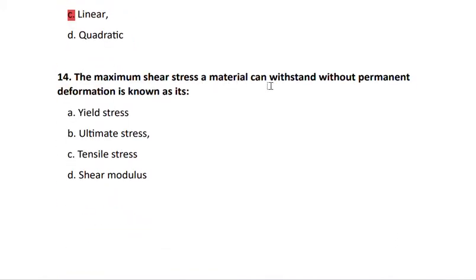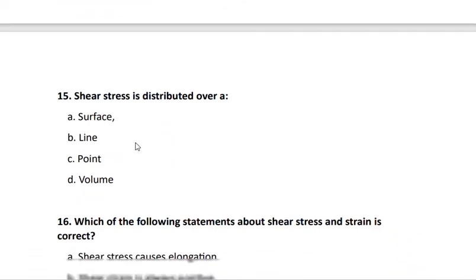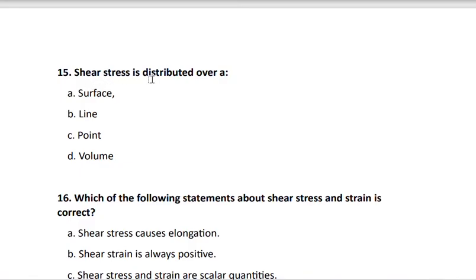Question 14: the maximum shear stress a material can withstand without permanent deformation is known as the ultimate stress — that is the largest stress the material can withstand. Question 15: shear stress is distributed over a surface, specifically the cross-sectional area of the surface.